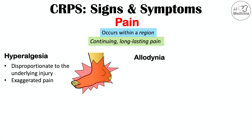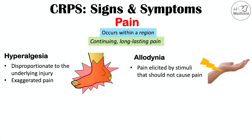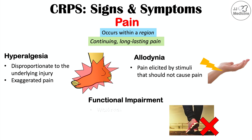Allodynia is another finding — pain is elicited in the affected area by a stimulus that should not cause pain, such as a gentle touch. This is due to the sensitization discussed earlier. Because of the pain with hyperalgesia and allodynia, functional impairment can result, leading to weakness and reduced ability for motion, with oftentimes reduced range of motion in the affected area.